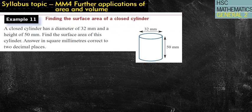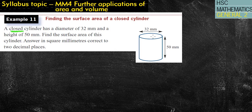So, let's start off by looking at this example. If you want to pause it, have a go at it, you're most welcome to. Okay, so, it says a closed cylinder has a diameter, and actually I'm going to underline closed because it's quite important, has a diameter of 32, which means I've got a radius of half of that, so a radius of 16.